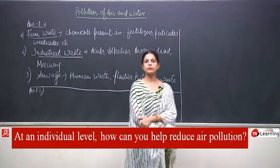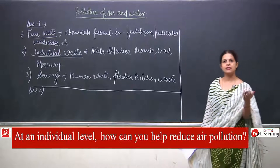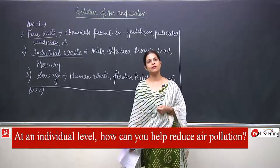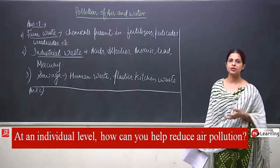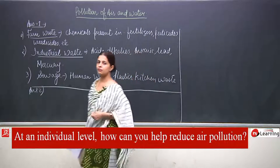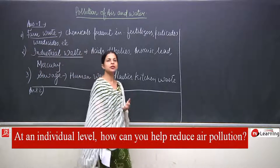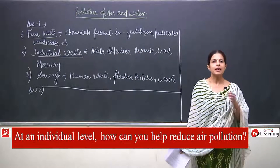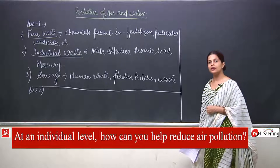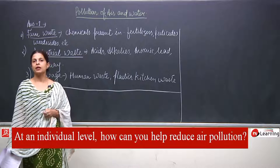First of all, avoid using our vehicles unnecessarily. We should use public transport, but before that, if we stop using vehicles unnecessarily — especially students of your age — where even bicycles can be used, you people still use two-wheelers like scooties. So if you stop using vehicles unnecessarily, pollution will be reduced. Second: use public transport and carpool.